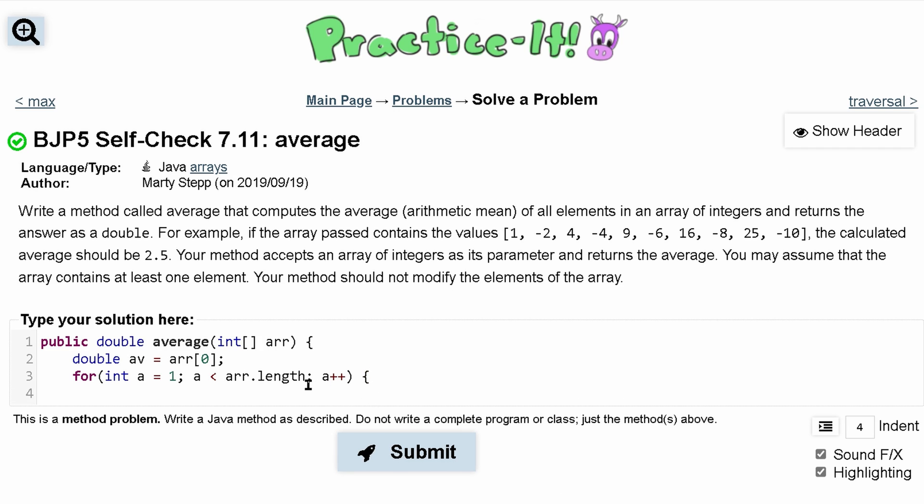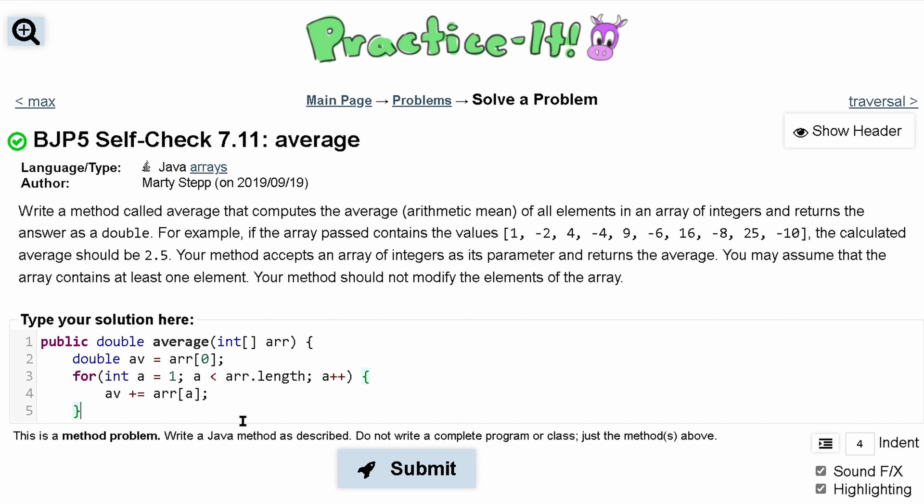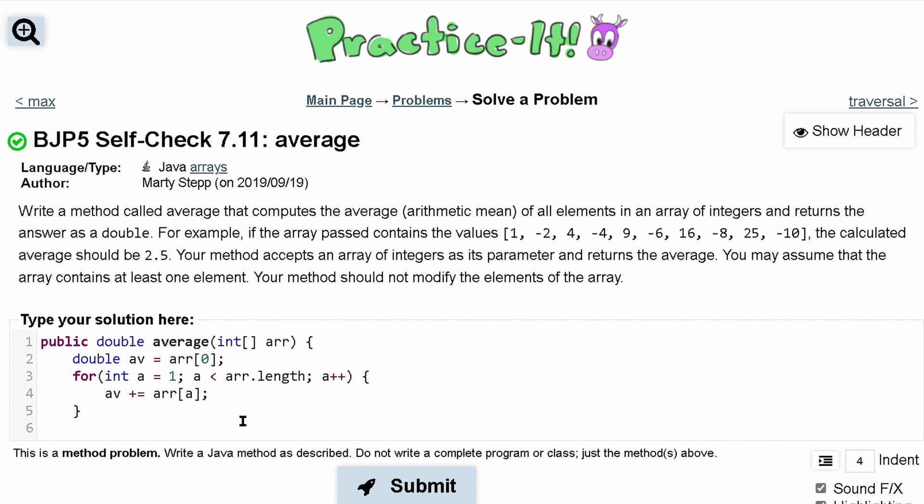Inside our for loop, we want to continuously add to our av, so av plus equals arr at a. We can end our for loop there.